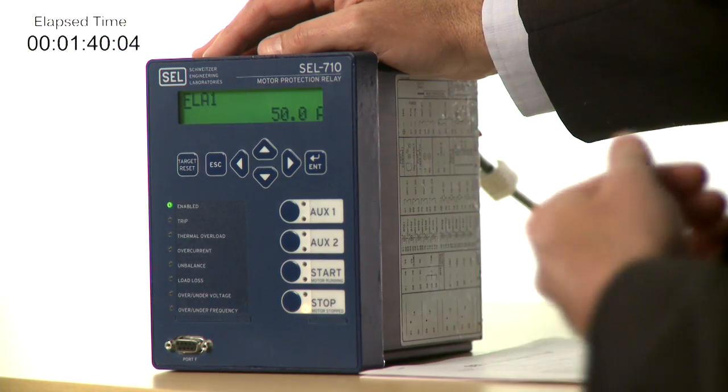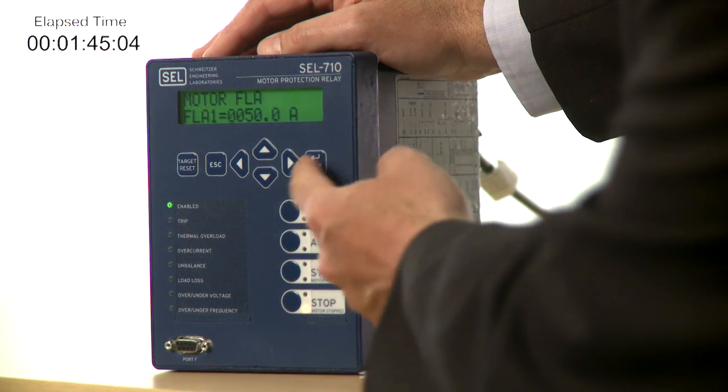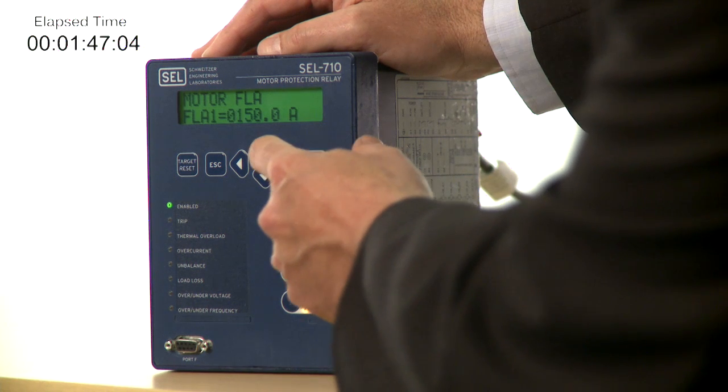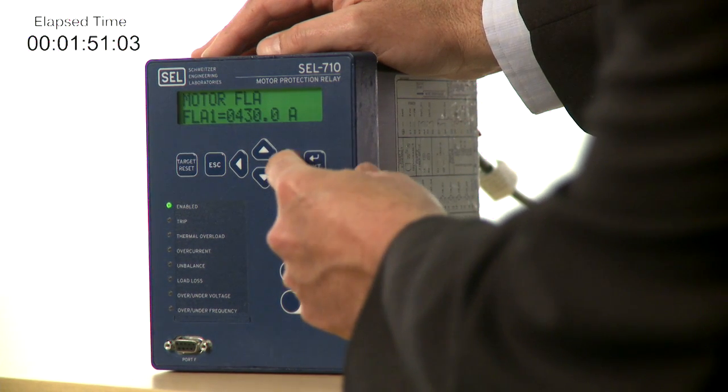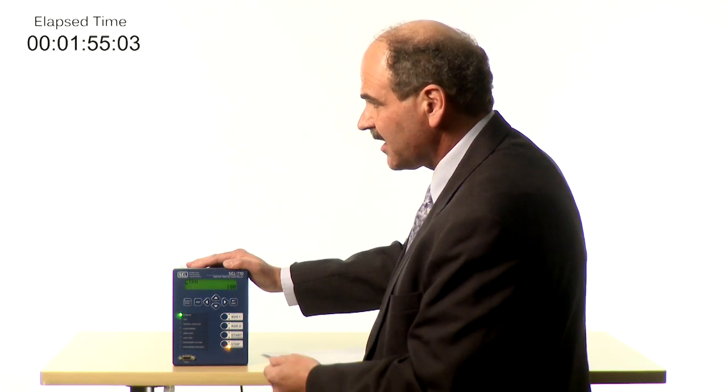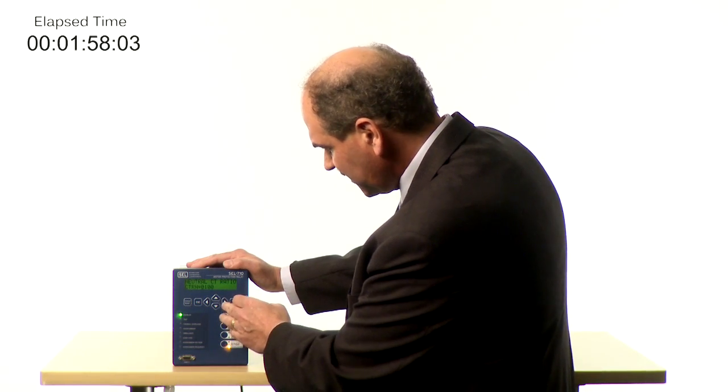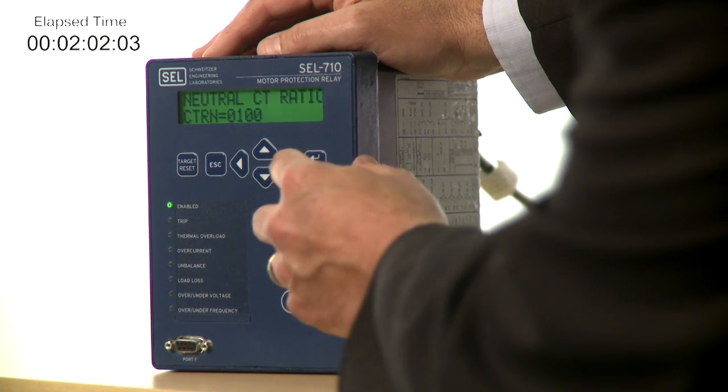The next setting is what's the full load amps. The full load amps for this motor was 439, so we're going to make that change. The CT ratio for the neutral is the next setting, and again the default is 100, and I need to reset that to 10. So we're going to make the change from 100 to 10.